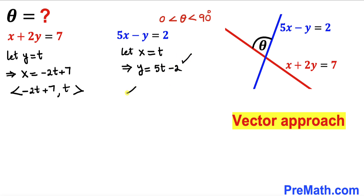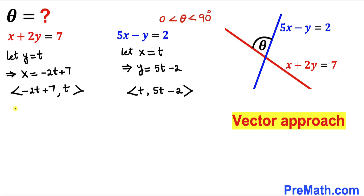So therefore the corresponding vector for this case is going to be t comma 5t minus 2. So therefore our vector u for the red line is going to be equal to the coefficient negative 2, comma the coefficient for t which is 1.